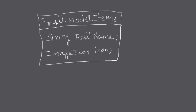First we will create a class called FruitModelItems. Each JList item is represented by this class. It will supply data for each JList item - at runtime it supplies the fruit name, which is the label we display for the item, and it also supplies an image icon. So one list item consists of two pieces of information: the fruit name and the icon we want to display with the list item.